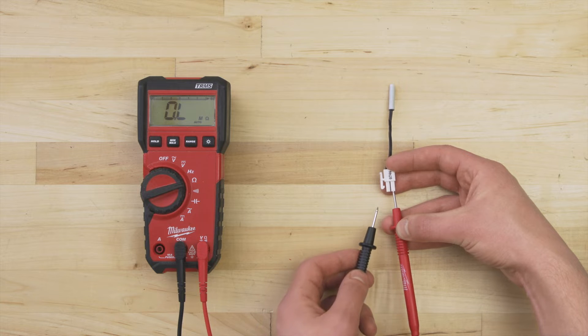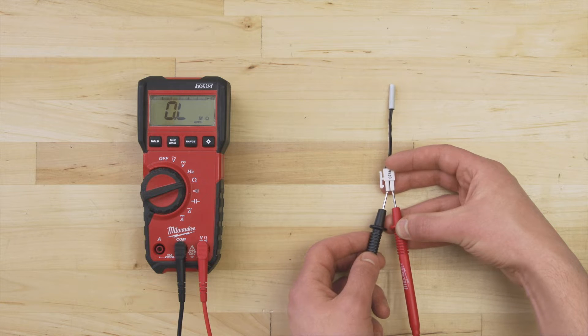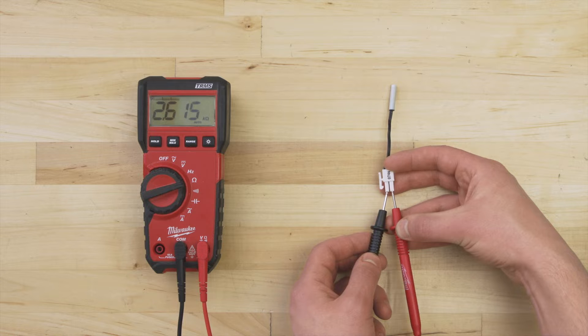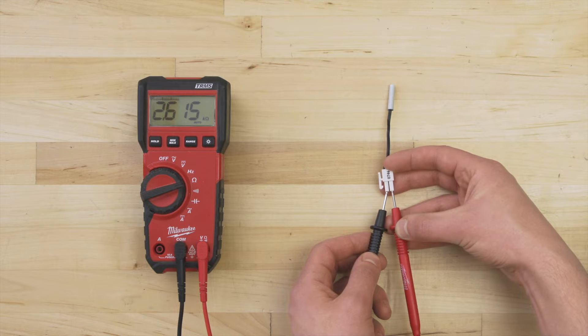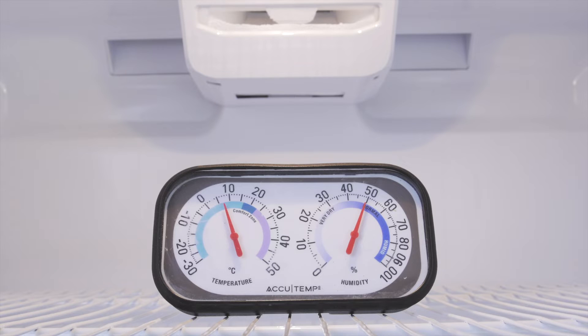We can test the resistance to verify if the sensor is defective. If the resistance is outside of the normal range, then the control board will misread the temperature. This can cause the fridge to be too warm or too cold.